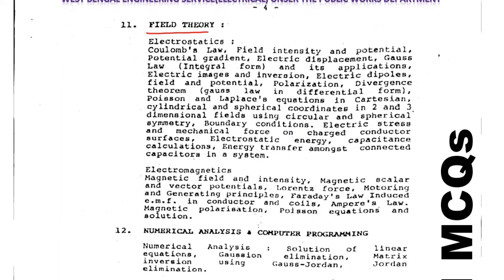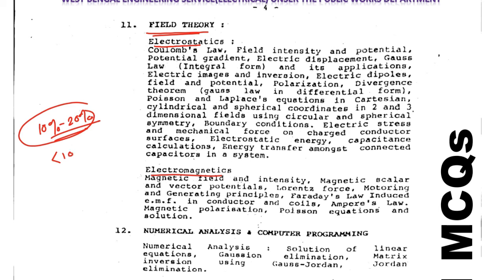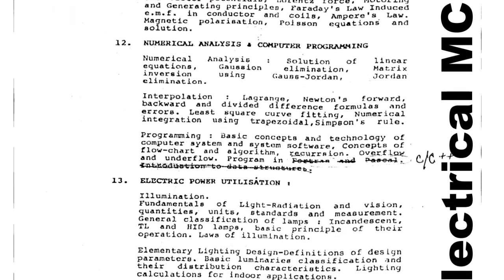Next is Field Theory. Within field theory, we have to learn about electrostatics and electromagnetics. There may be 10 to 20 percent questions from this chapter, but generally it is less than 10 percent. Numerical Analysis and Computer Programming is also included in the syllabus, but the number of questions from it is generally very less.